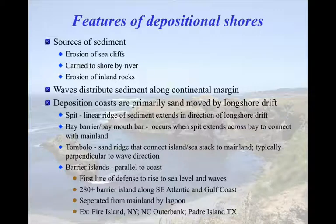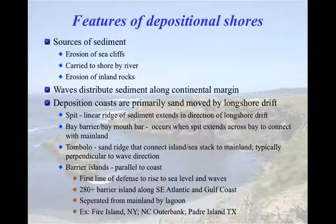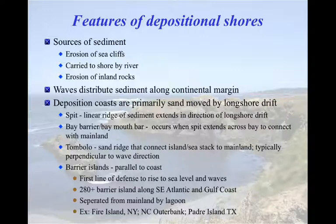Barrier islands are typically parallel to the coast. The east coast of the United States has around 300 of them, and they are separated from the mainland by a lagoon. We even used to have them in Monmouth County — a series stretching from Sandy Hook all the way down to Manasquan — but the Manasquan jetty starved the beaches of sediment and they all fell apart.